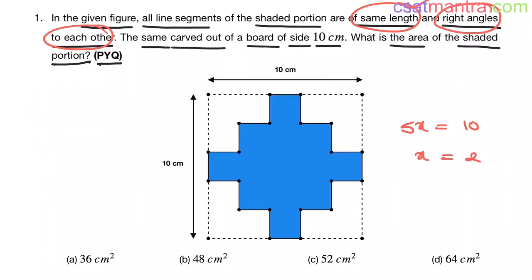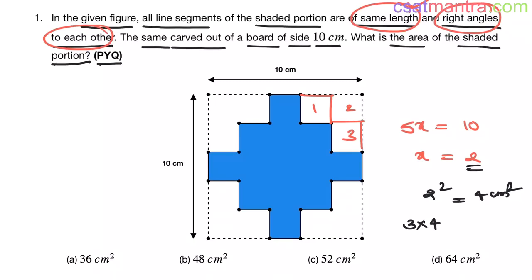If you observe here, there are 3 squares in each corner — 1, 2, 3. The area of each square is 2 squared, where 2 is the side of the square, that is 4 centimeter square. And in one corner we have 3 such squares, so the total area is 3 into 4, that is 12 centimeter square.